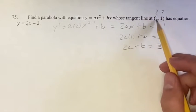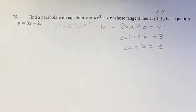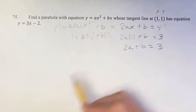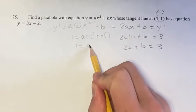Plugging in 1 for x and 1 for y into this equation will give us 1 is equal to a times 1 squared plus b times 1, which gives us 1 is equal to a plus b.